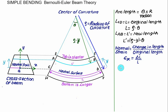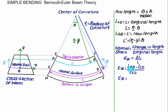Solving for epsilon_x: it equals length of AB minus length of CD, divided by length of CD. Substituting: length of AB is rho minus Y times theta, which expands to rho·theta minus Y·theta. Subtracting length of CD, which equals rho·theta, and dividing by rho·theta in the denominator — the rho·theta terms in the numerator cancel out.